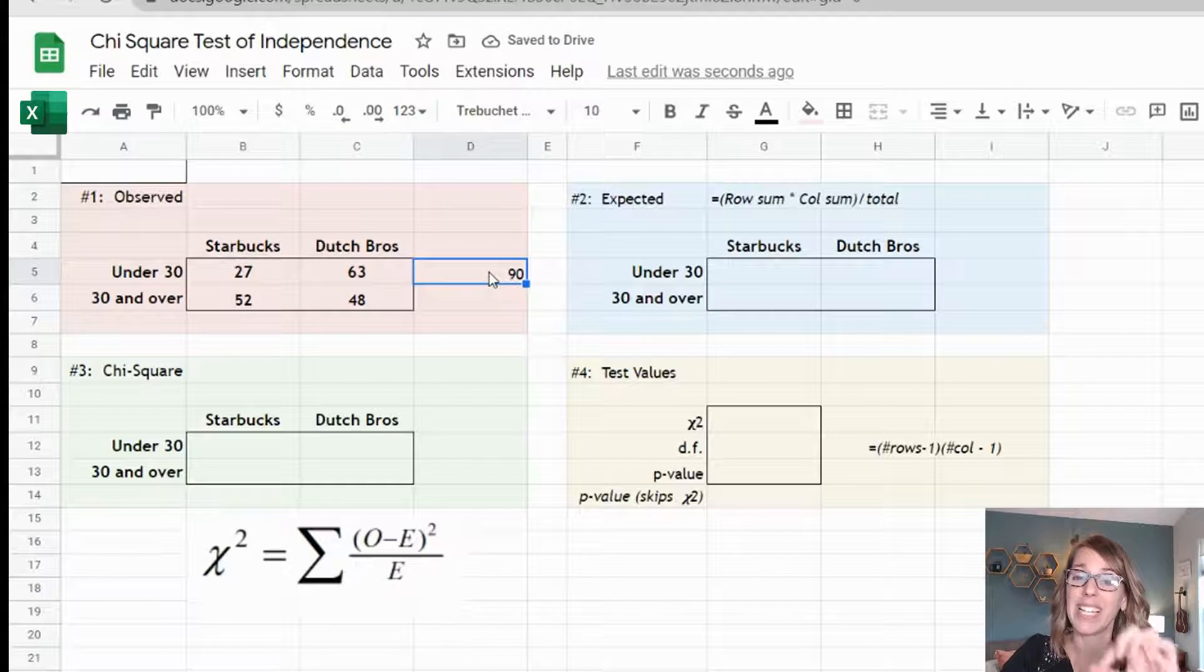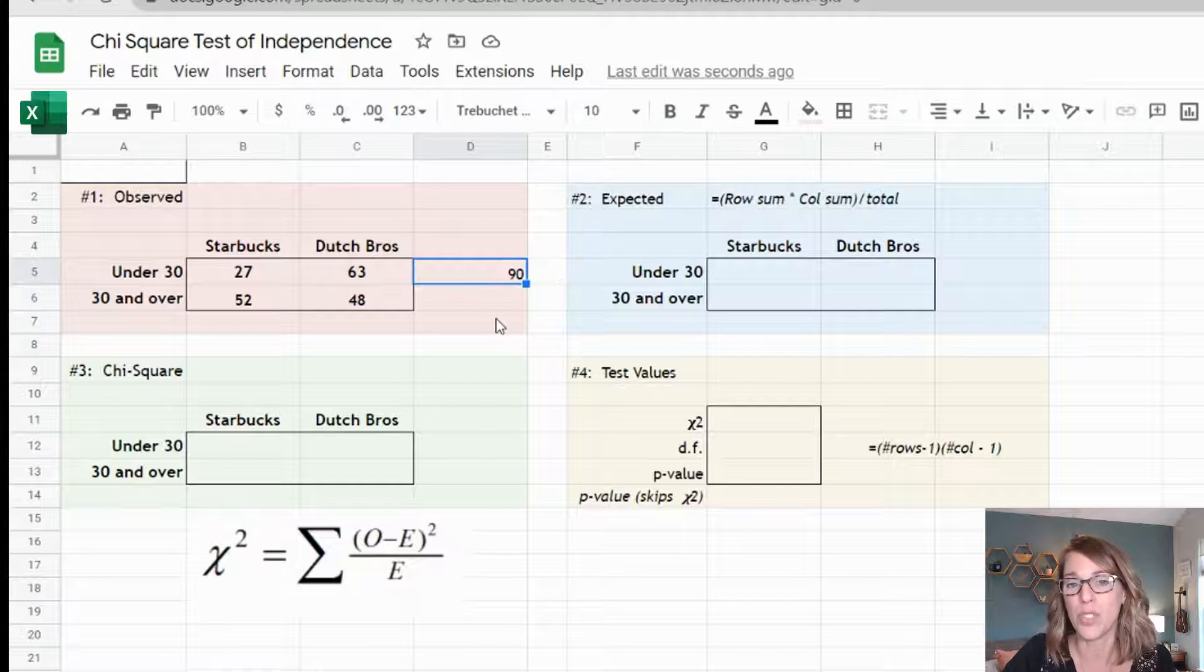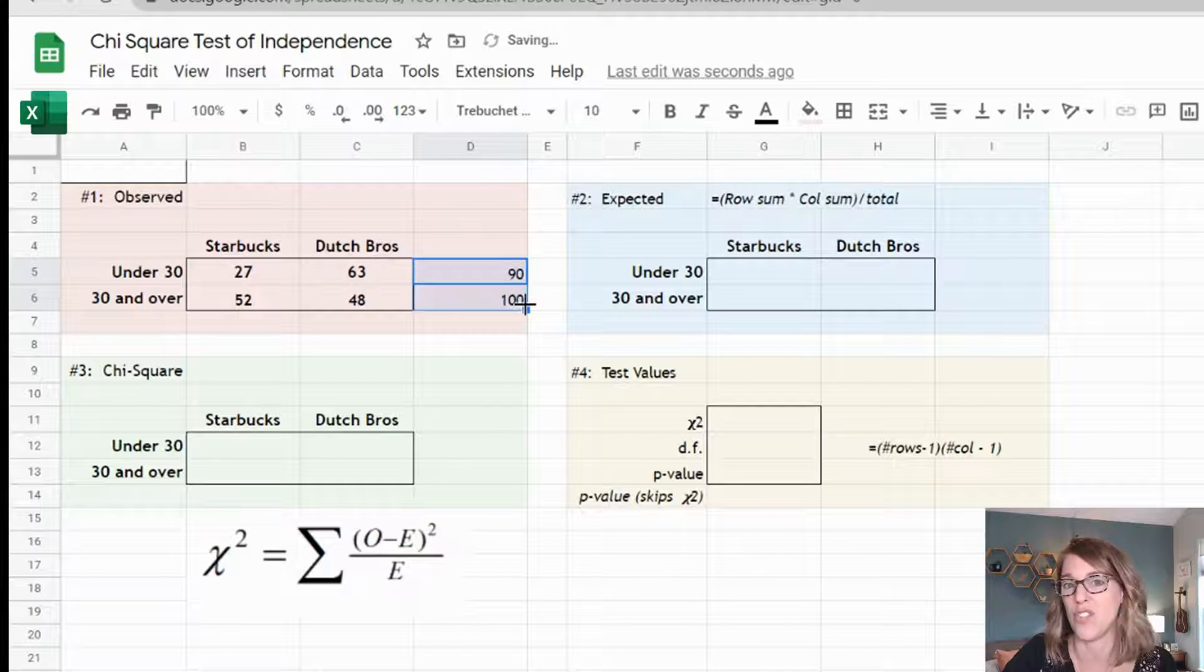Now I can drag this formula down by clicking on that last input. I'm going to look for that blue square in the bottom corner, hover over it till I get the plus sign, then click, hold and drag.